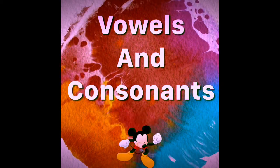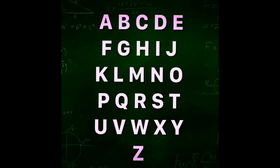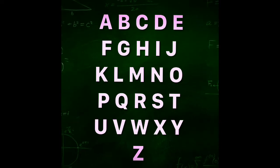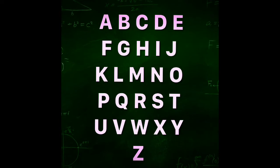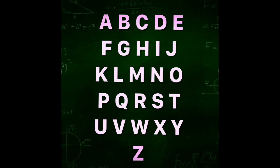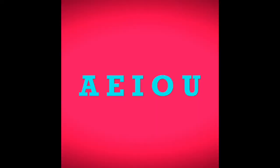Vowels and consonants: a, b, c, d, e, f, g, h, i, j, k, l, m, n, o, p, q, r, s, t, u, v, w, x, y, and z. There are 26 letters in our alphabet. There are five vowels.